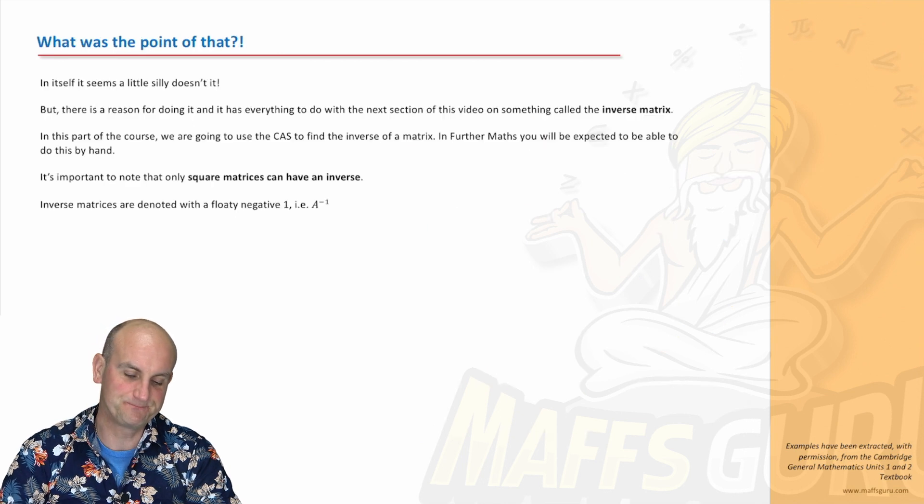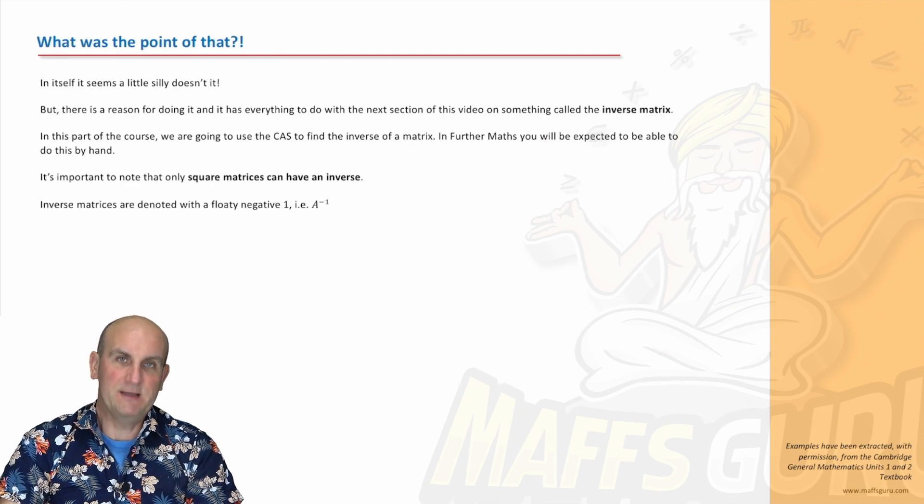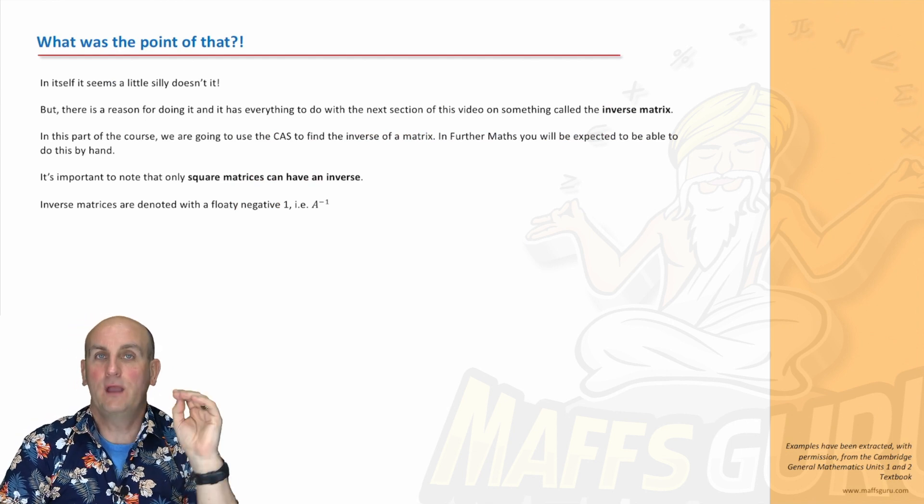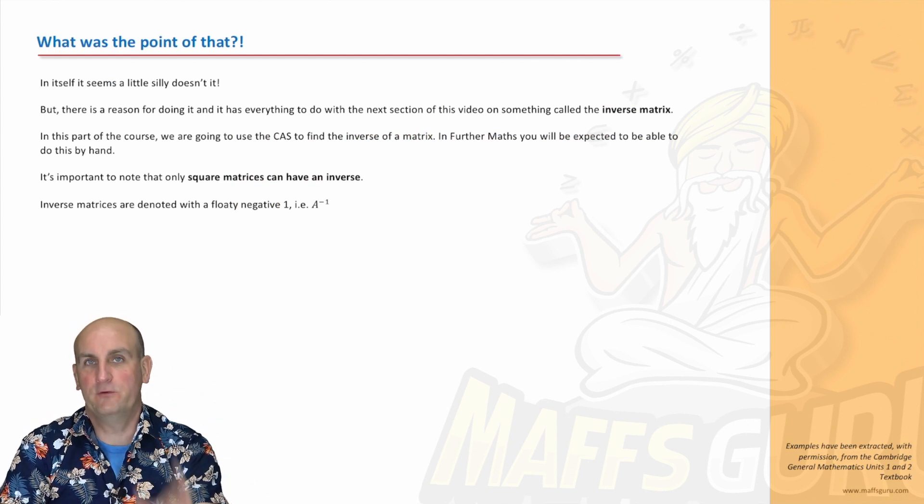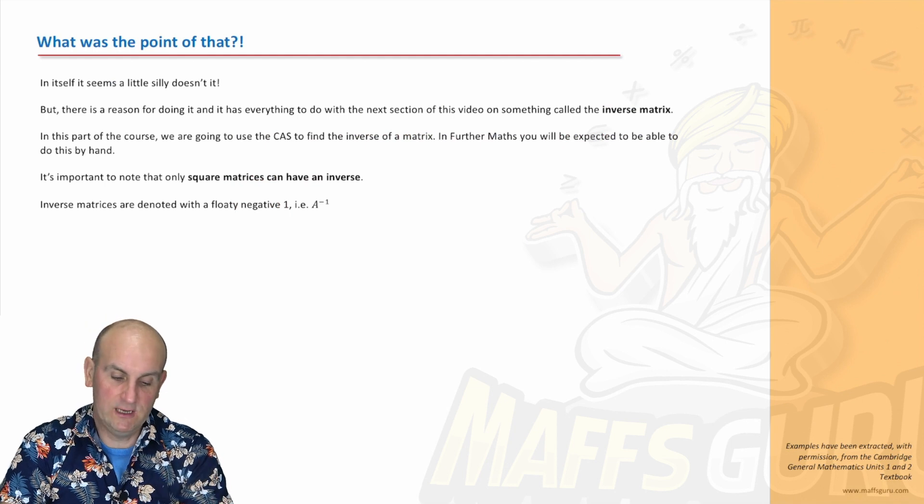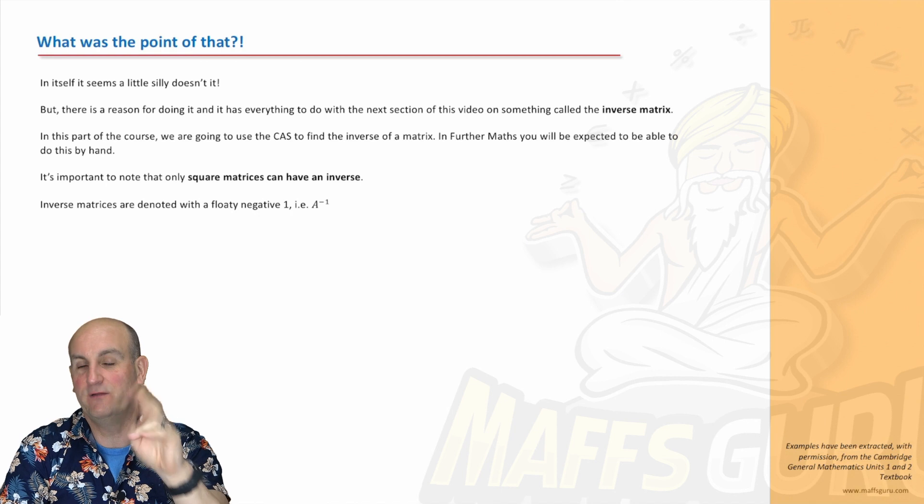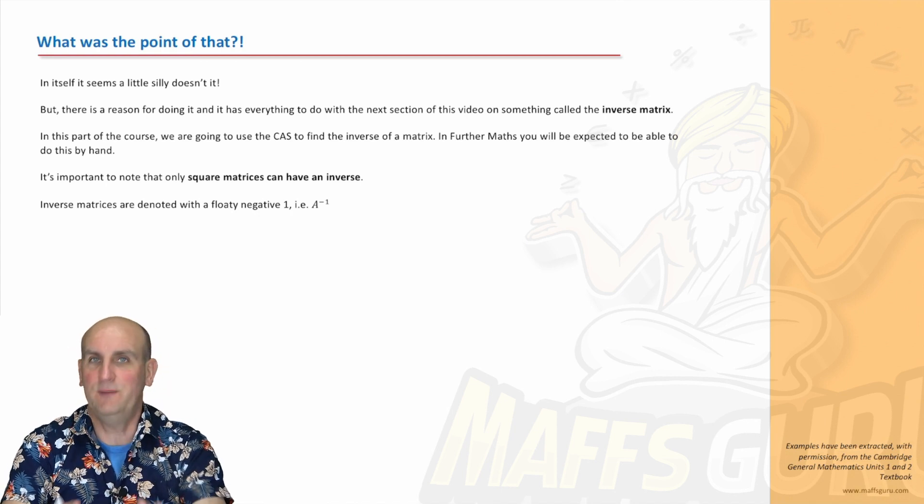Why would that be useful to me? This is where it comes interesting. Basically, I'm not going to tell you until the next video. The idea that the identity matrix multiplies by one is actually really, really important. It's going to come up a little bit later on, and I'm going to show you a little bit of algebra. Don't panic. It's fine.